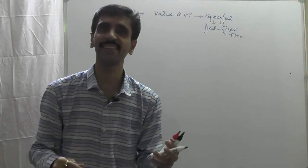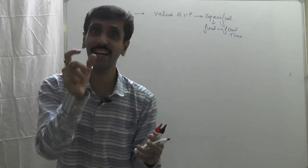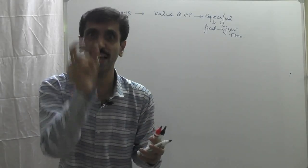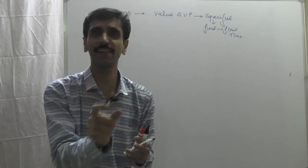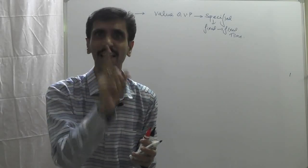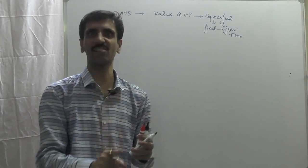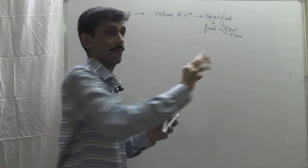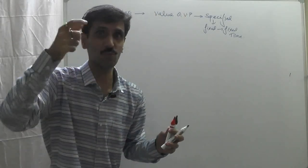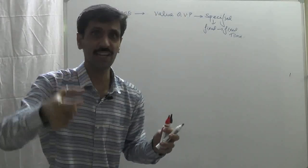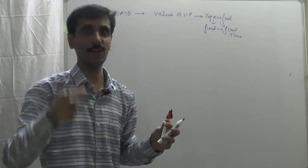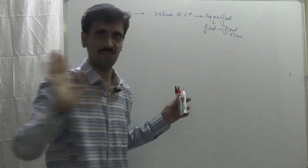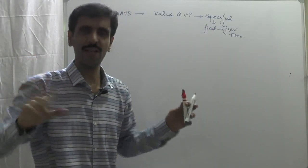Say, for example, 25 degrees Celsius. At 12 noon, probably the temperature is 32 degrees Celsius — but there also the time is fixed, so the temperature has one single value: 32 degrees Celsius. This is what it means: the value of the variable property is specified as one single well-defined value when the time is fixed.